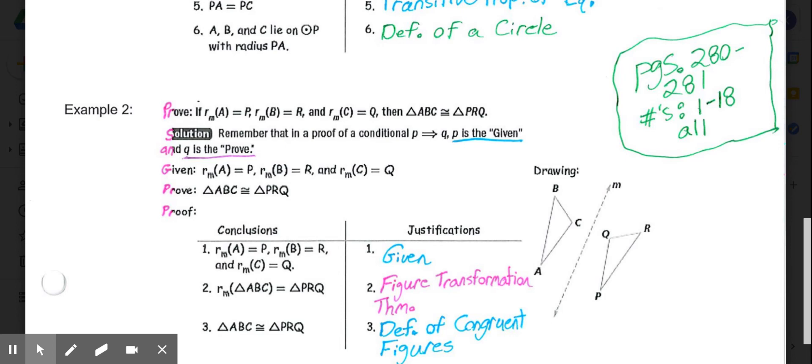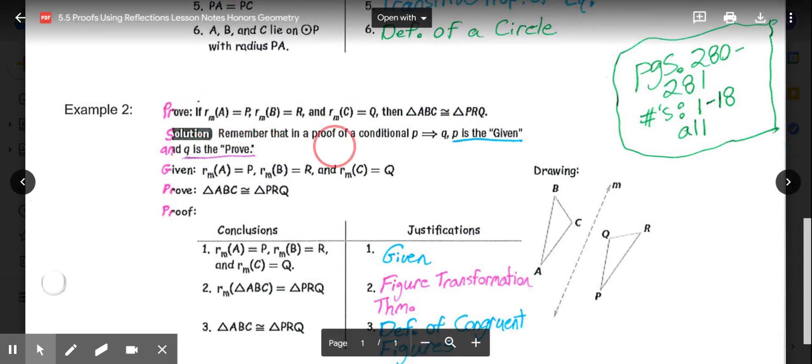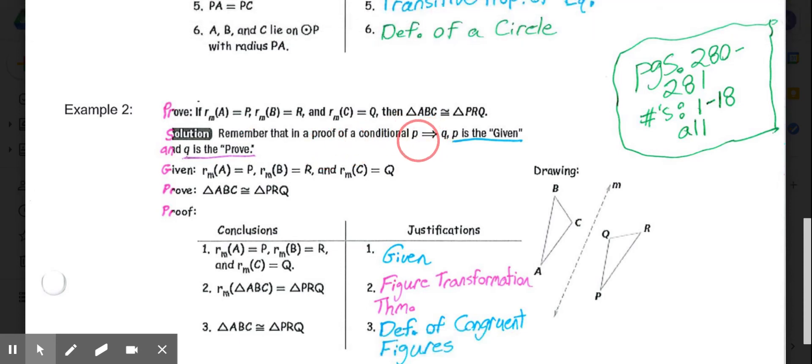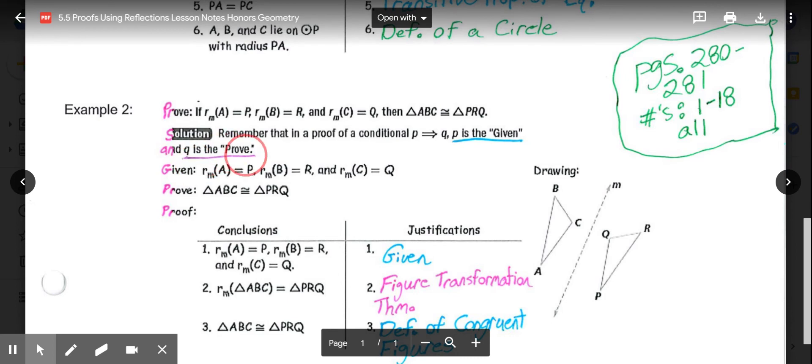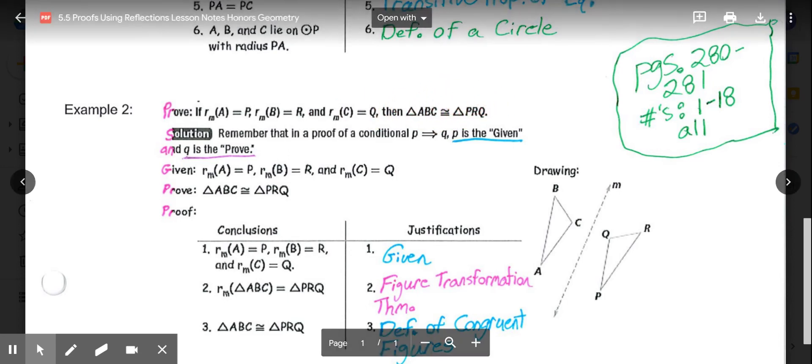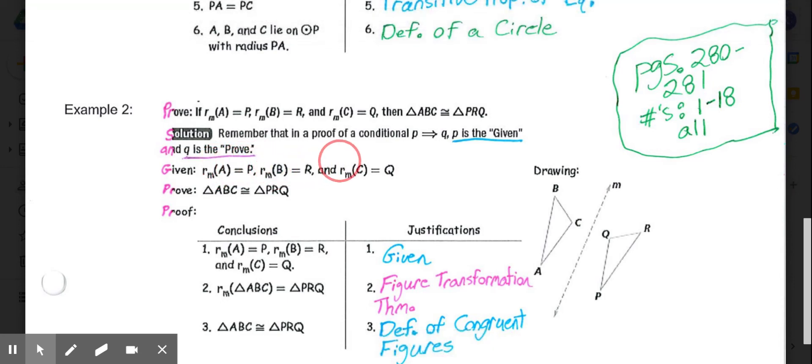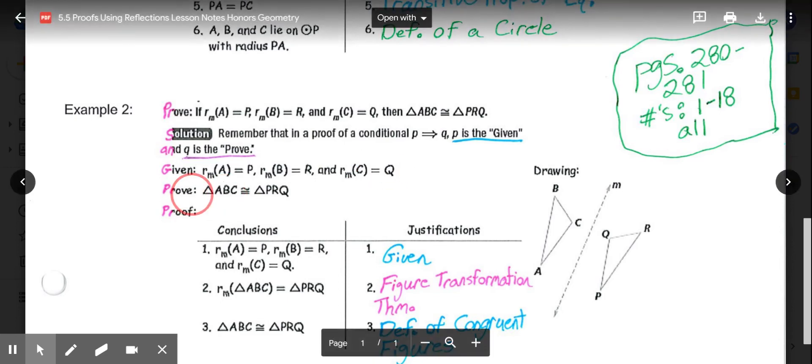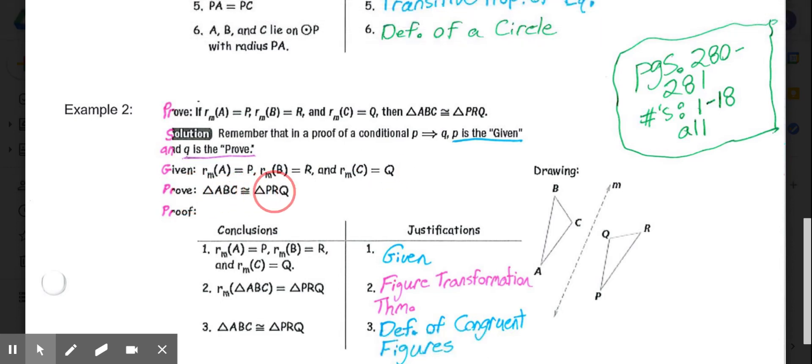In these statements, if they give us an if-then statement, what that means is a proof is written in the form if P, then Q. So P, the if part, is always the given, and Q is the prove. So what follows if is your given. What follows then is your prove. So our given would be the reflection of A is P, reflection of B is R, and reflection of C over M is Q. The prove is just that triangle ABC is congruent to triangle PRQ.